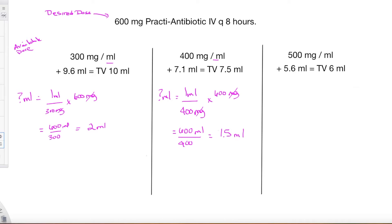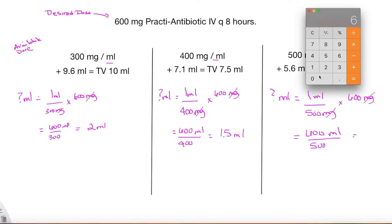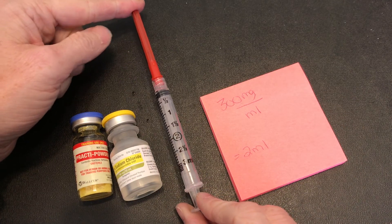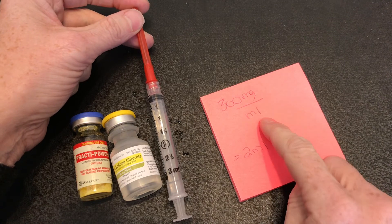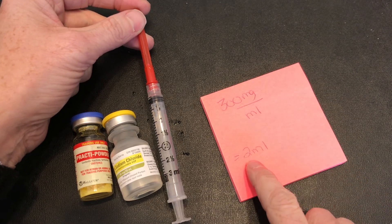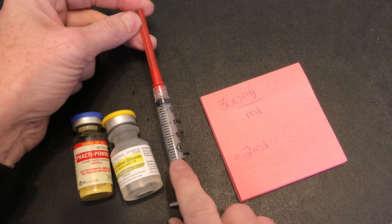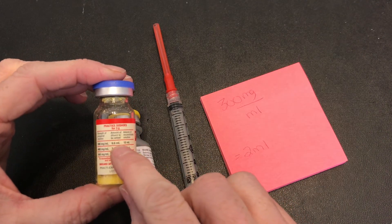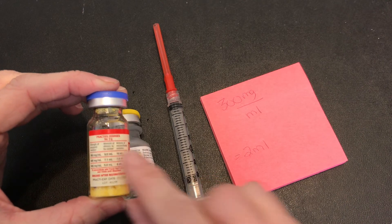Similarly for the 500 milligram per ml concentration the recipe required 5.6 mls of diluent. I would have a total volume of 6 mls. Using dimensional analysis again I discover I would only need 1.2 mls of the medication to achieve the desired dose. So after looking at my equipment I have a 3 ml syringe, I've decided to use the 300 milligrams per ml concentration because I can accurately draw up 2 mls.